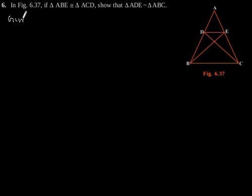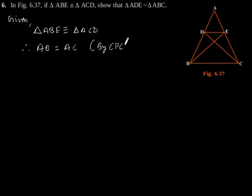It is given in the question that triangle ABE is congruent to triangle ACD. Therefore, AB is equal to AC by CPCT. Let's say this is equation 1. And AD is equal to AE, again by CPCT. Let's say this is equation 2.